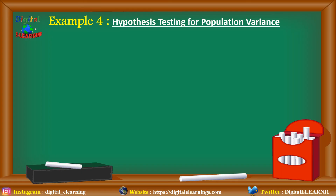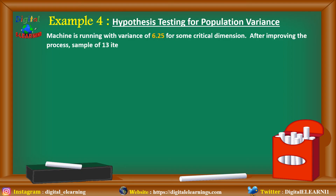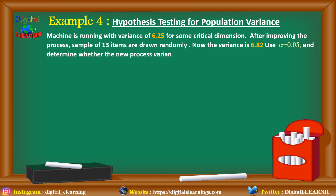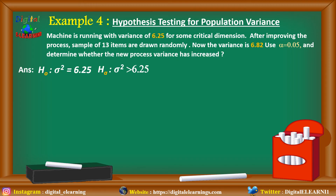Let's take the last case — hypothesis testing for population variance. A machine is running with a variance of 6.25 for some critical dimension. After improving the process, a sample of 13 was drawn randomly, and the new variance is 6.82. With alpha as 0.05, we determine whether the new process variance has increased. This is a right-tailed test. The null hypothesis is variance equal to 6.25, and the alternate is variance greater than 6.25.